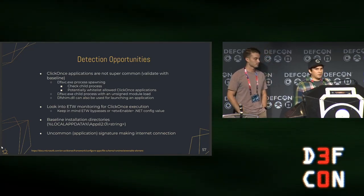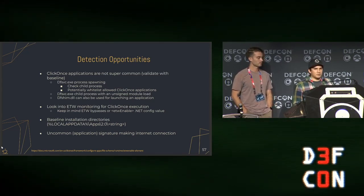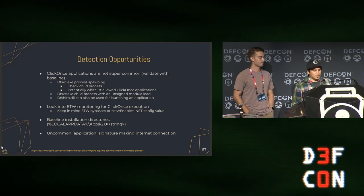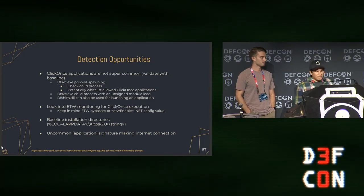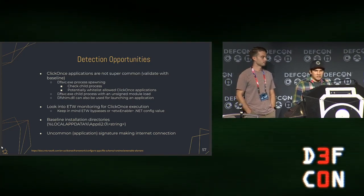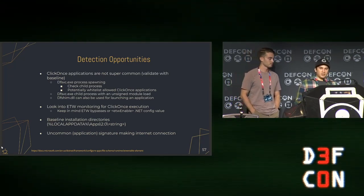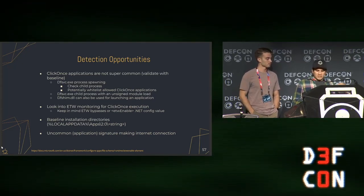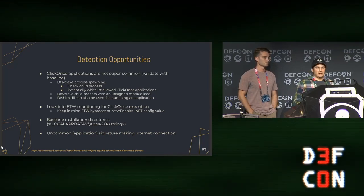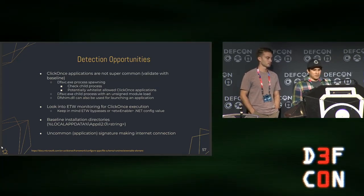Every ClickOnce deployment is downloaded to the local AppData directory, so baselining that directory and looking for outliers is an opportunity. Also watch for uncommon application signatures making internet connections — our first technique of backdooring existing deployments often uses lesser-known companies, so an uncommon signature establishing C2 or doing something nefarious is detectable.